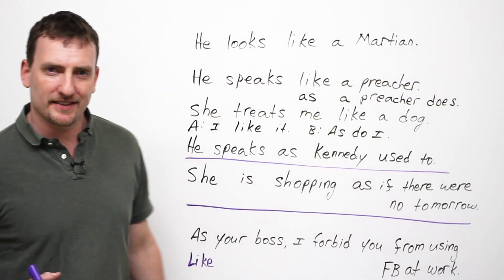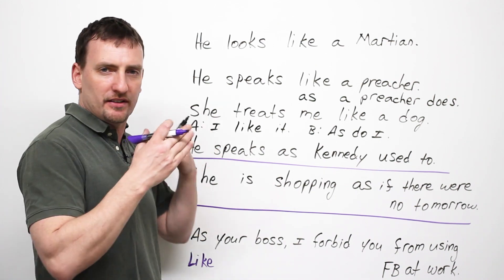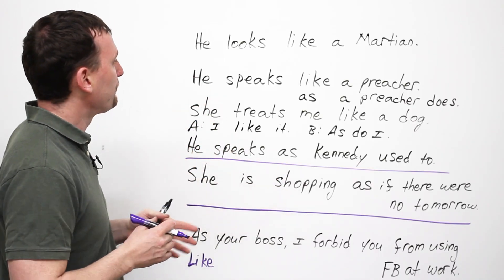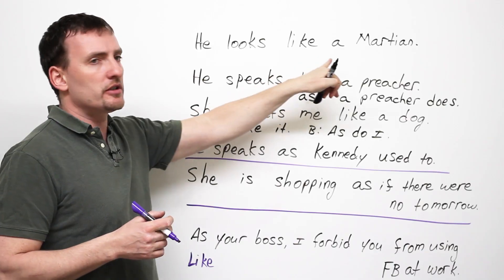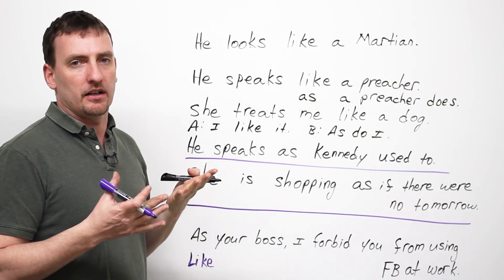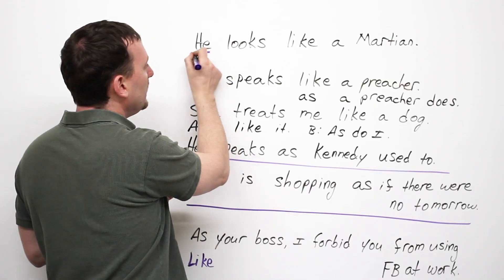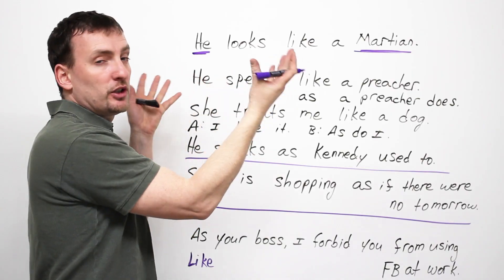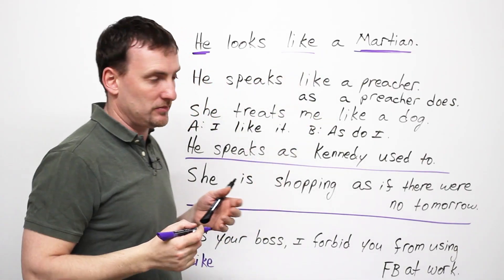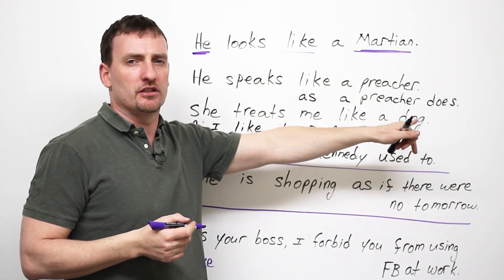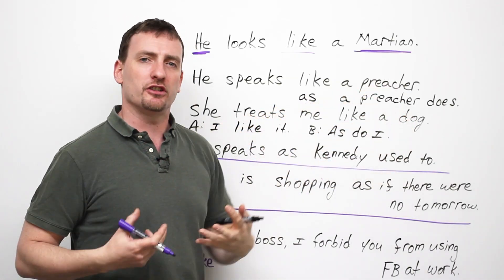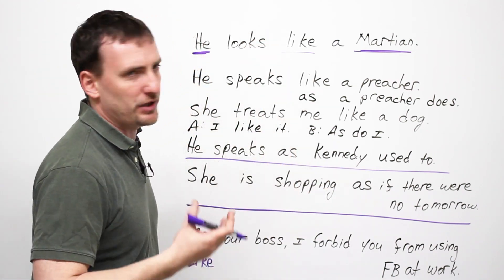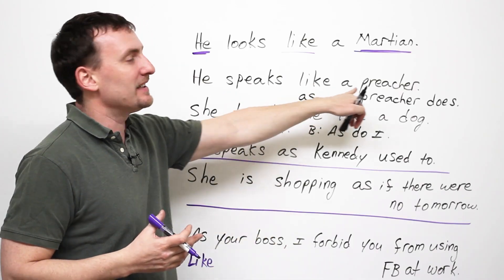So here we have a few more examples to really show you how the differences work, between like and as, and what you have to pay attention to. So, first, let's look at these examples. He looks like a Martian. What am I comparing here? I'm comparing he and Martian. Same look, right? But I'm comparing two people, and that's why I'm using like. He speaks like a preacher. If you're not really sure what a preacher, a preacher stands in the church, and says, oh, you should do this, and you should do that, because, well, probably God, but hey, it's up to them. He speaks like a preacher.